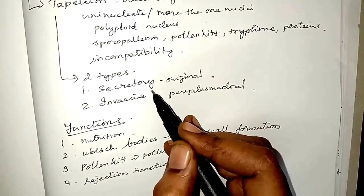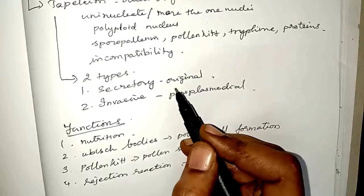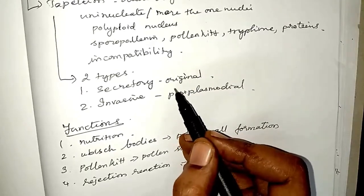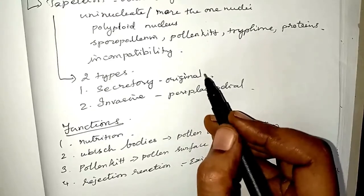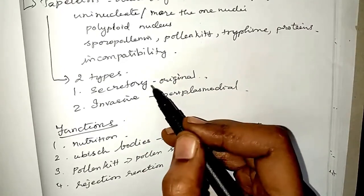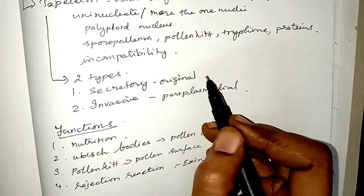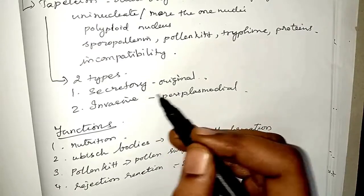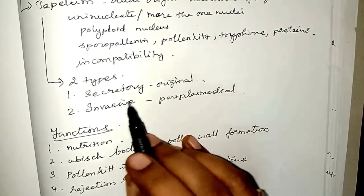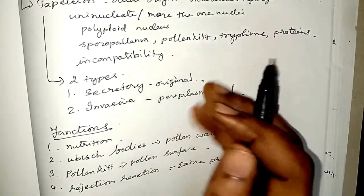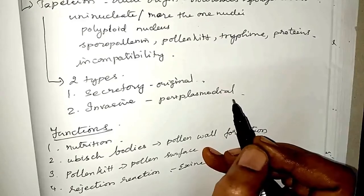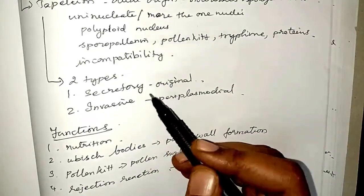There are two types of tapetum. The first is secretory tapetum, otherwise called parietal, glandular, or cellular tapetum, in which the tapetal cells retain their original position and integrity — they nourish the developing microspores without changing their morphology or physiology. The second type is invasive tapetum, also called periplasmodium, where cells lose their inner tangential and radial walls and the protoplasm of all cells unites to form a periplasmodium.